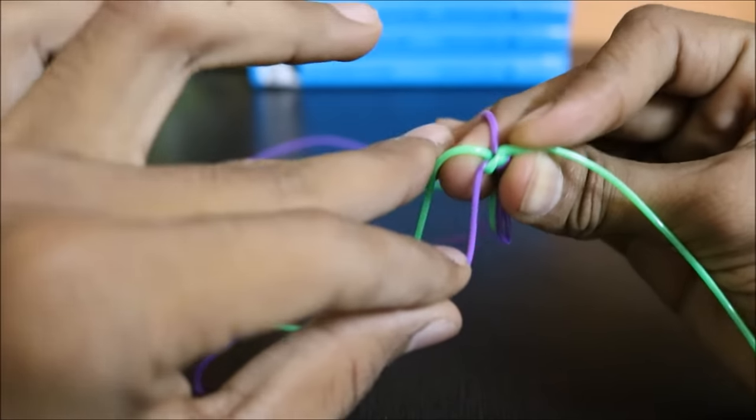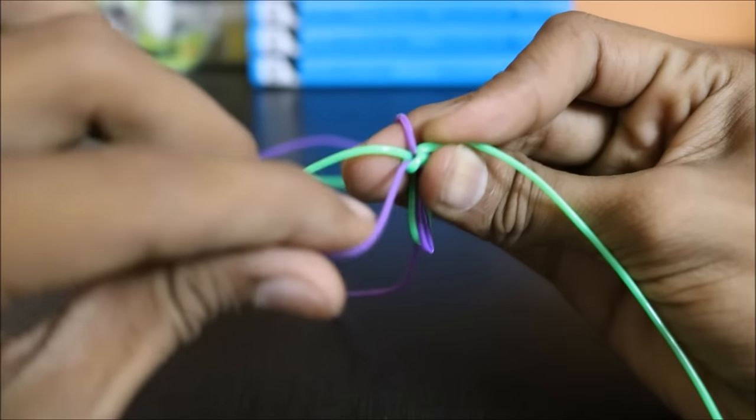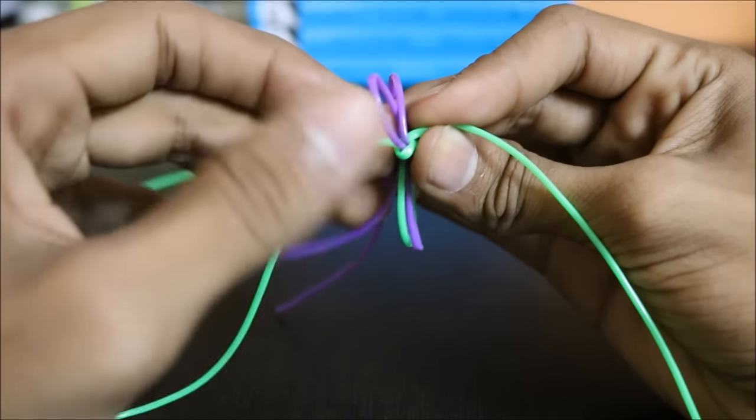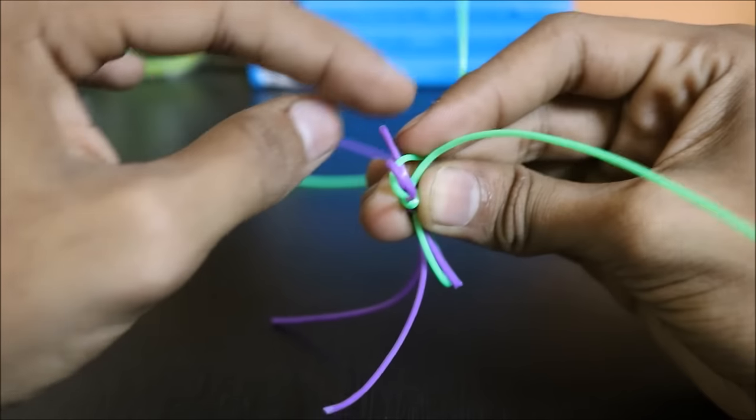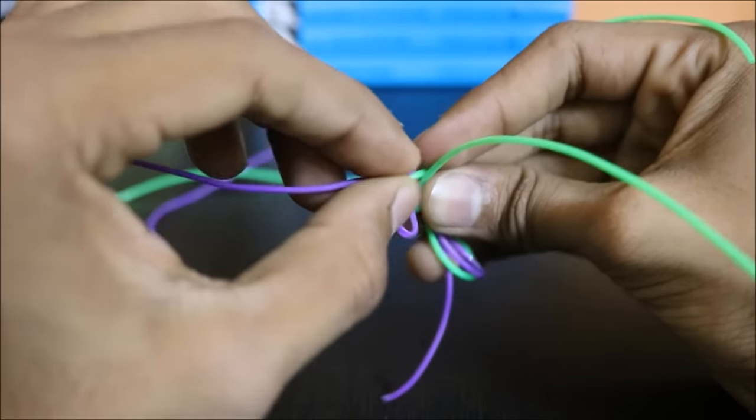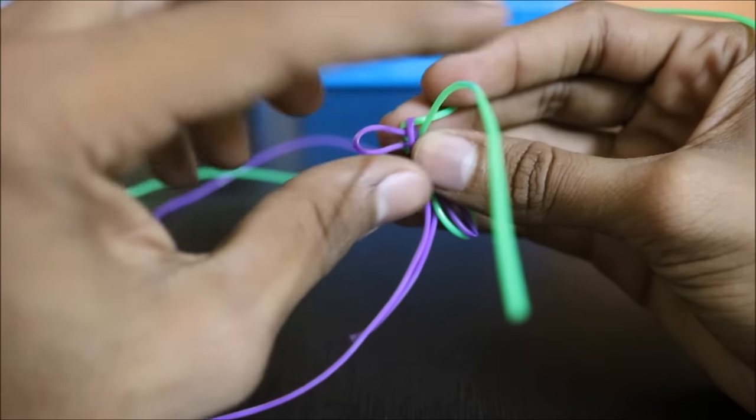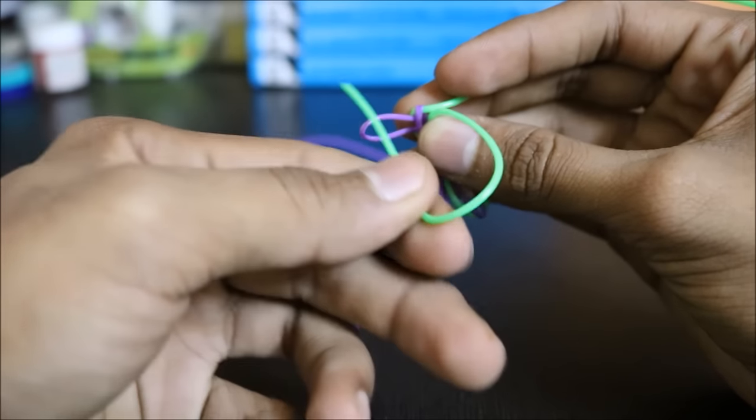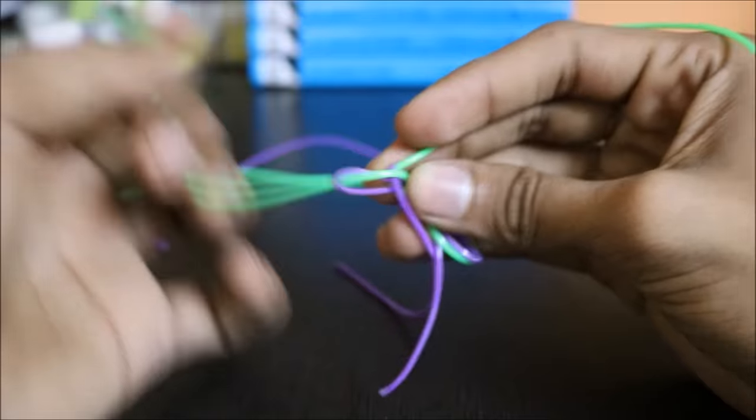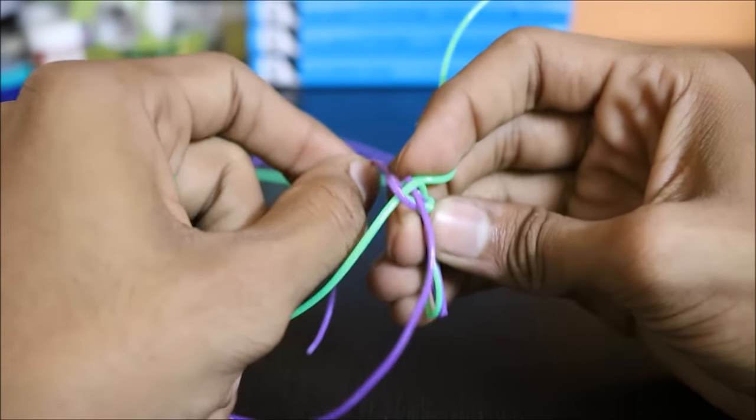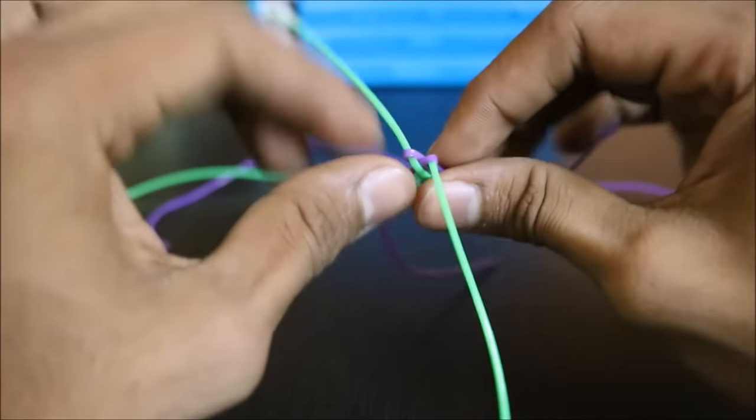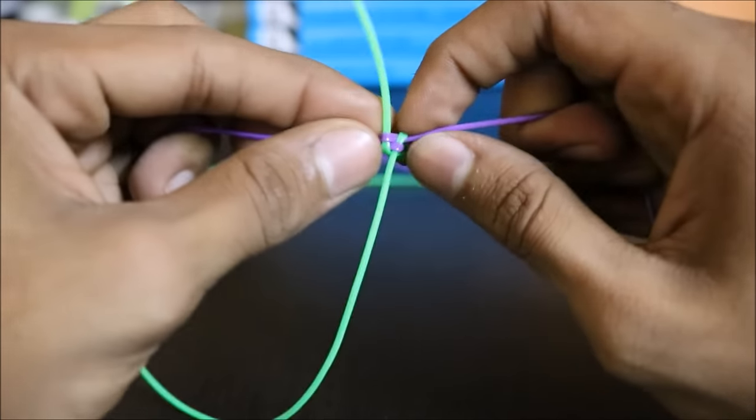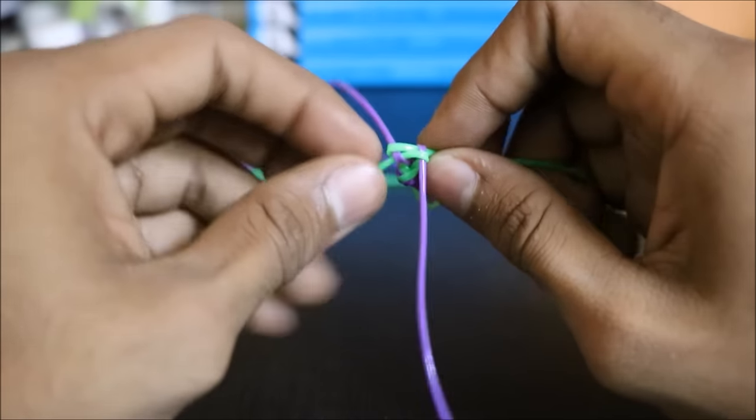I have purple and green. The purple goes over the second one, and then the last one goes to this loop. It's important to create a loop in step one so you can pass the last string through it. When you pull them together, it looks like a square.